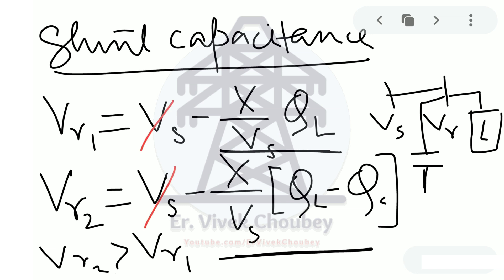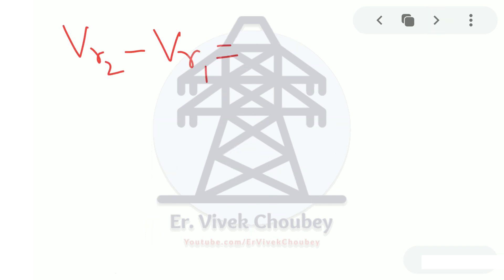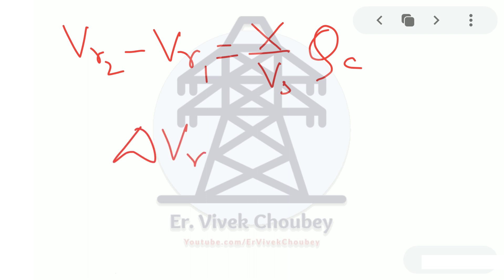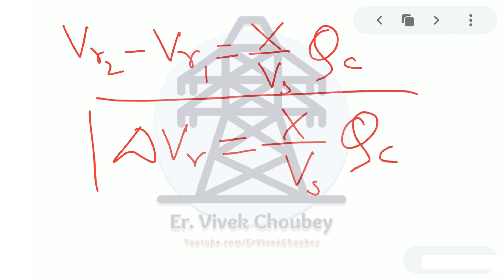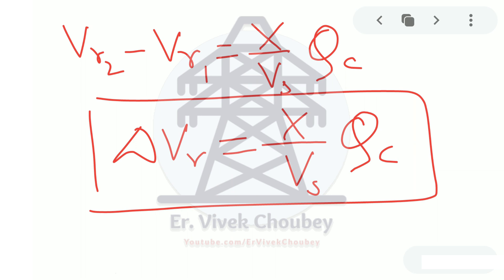Subtracting Vr1 from Vr2, the voltage correction factor ΔVr equals (X/Vs)·Qc. This means if we know how much voltage correction is required, the line reactance, and the sending end voltage, we can calculate the required reactive power of the capacitor and determine what capacitance in Farads is needed to compensate the falling voltage.